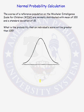In this problem we will do three normal probability calculations. They all involve the following scenario: the scores of a reference population on the Wechsler Intelligence Scale for Children are normally distributed with a mean of 100 and a standard deviation of 15.